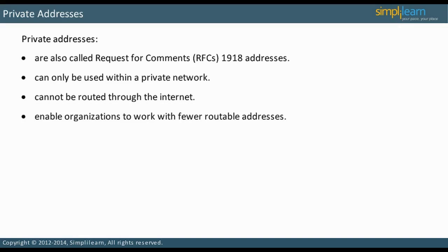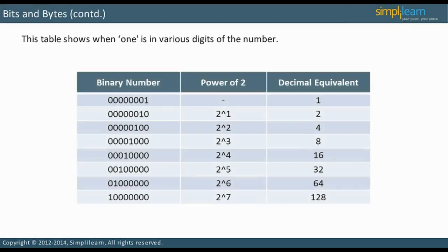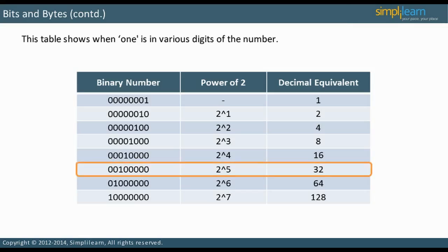Next, let us look at binary numbers and how to convert them to decimal. The table on the slide highlights what it means when a 1 is in various digits of the number. For example, if a 1 is in the 6th digit from the right, this represents 2 to the 5th power, or 32.